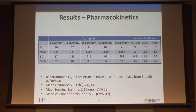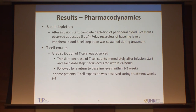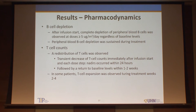The PK is dose proportional from 5 to 90 micrograms per meter squared per day. Terminal half-life in lymphoma is the same as in ALL — about two hours — so nothing surprising. Looking at pharmacodynamics, profound B-cell depletion was demonstrated as expected. They also saw some redistribution of T-cells with some decreases immediately thereafter, nadir within 24 hours, and return over the first one to two weeks. In some patients, T-cell expansion was seen during weeks two to four.